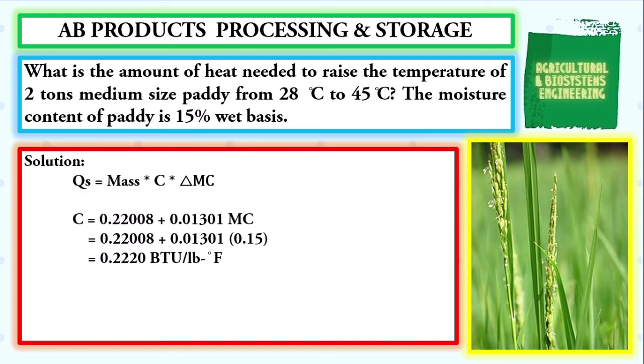Now that we solved for the value of specific heat, we substitute it to our formula for QS. Substituting the values, we have the mass of 2 tons times the specific heat of 0.2220 BTU per pound degree Fahrenheit, times the change in temperature of 113 degree Fahrenheit minus 82.2 degree Fahrenheit.